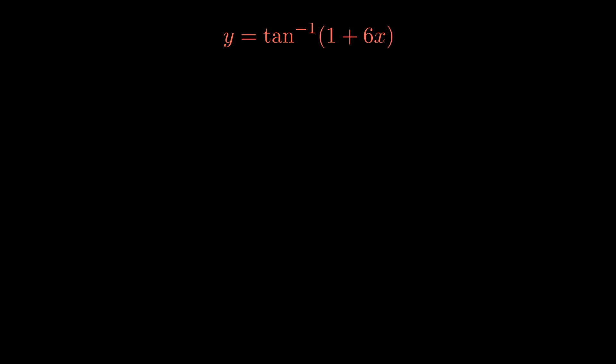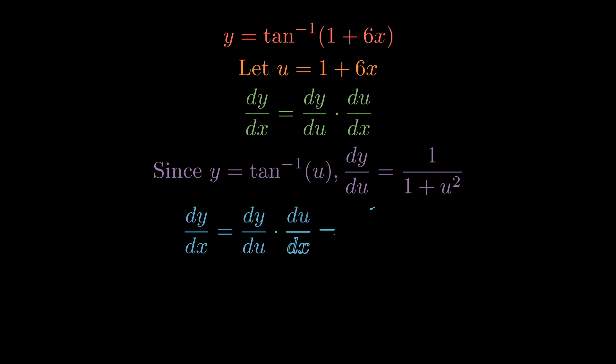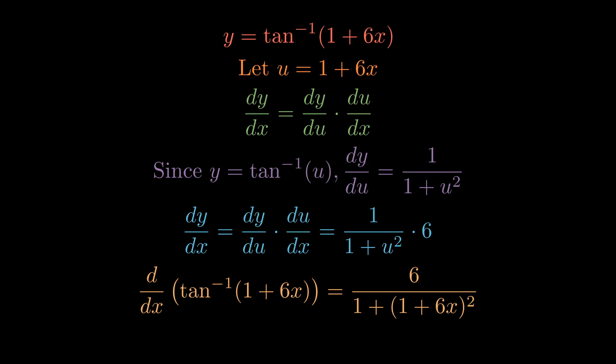Now let's see another example of differentiating using the chain rule: find the derivative of arctan(1+6x). The outer function is arctangent and the inner function is 1+6x. Let u=1+6x, so y=arctan(u). By the chain rule, dy/du is 1/(1+u²) and du/dx is 6. Multiplying gives 6/(1+u²). Substituting back gives the final answer: 6/(1+(1+6x)²).